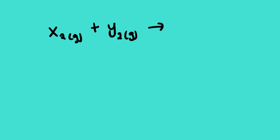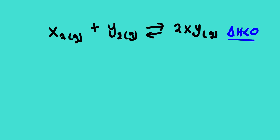In this lesson video we are going to look at what happens to the chemical equilibrium when it is disturbed by one of those three factors. Suppose we have element X₂ in gas phase and element Y₂ also in gas phase — they produce XY, also in gas phase. This reaction is a reversible reaction that has reached equilibrium, and it is an exothermic reaction, meaning the change in enthalpy is negative.